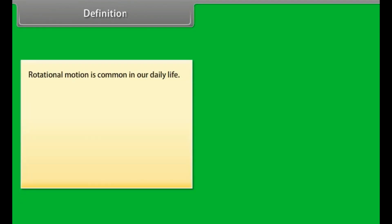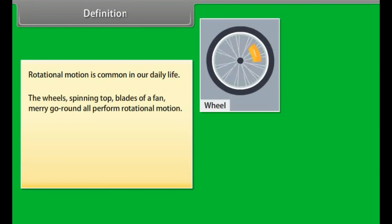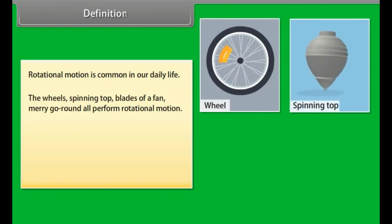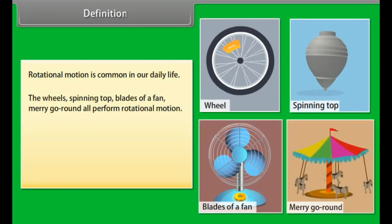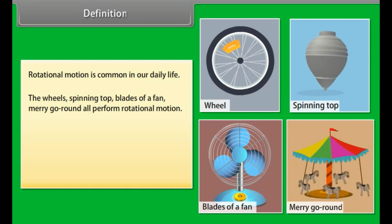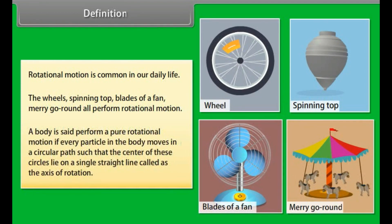Rotational motion is common in our daily life. The wheels, spinning top, blades of a fan, and merry-go-round all perform rotational motion. A body is said to perform pure rotational motion if every particle in the body moves in a circular path such that the centers of these circles lie on a single straight line called the axis of rotation.